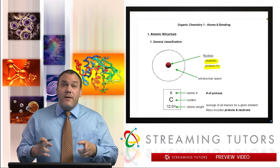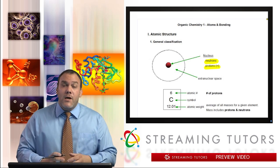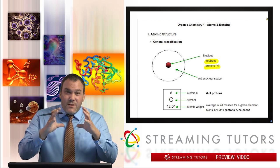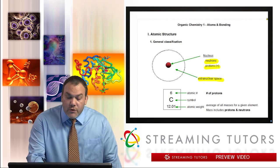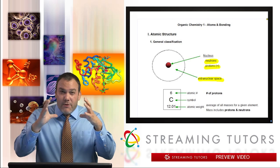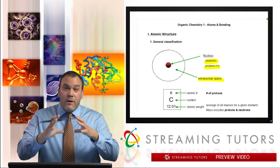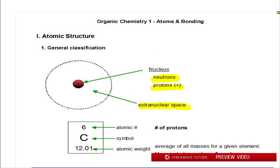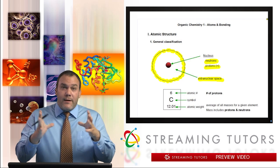Surrounding that nucleus is what we call extranuclear space — all the space outside of the nucleus. Extranuclear space is really infinite; it goes on forever. But there is a certain region of space which we call the electronic cloud area, the area where electrons will be found. We use a dotted line to represent the boundary of where electrons are going to be located, anywhere within this boundary inward towards the nucleus.